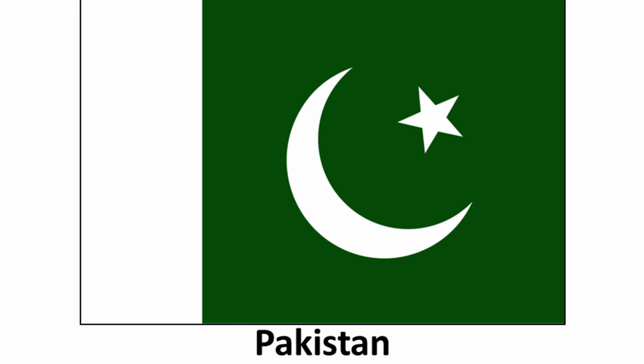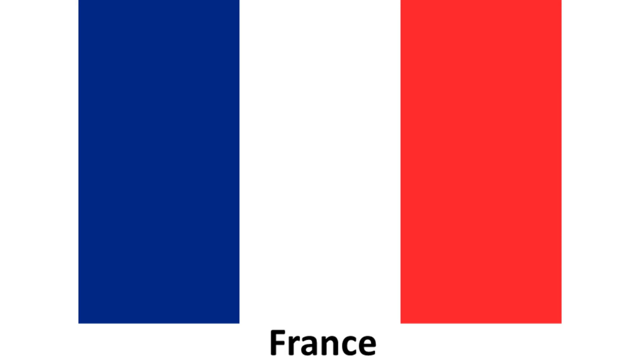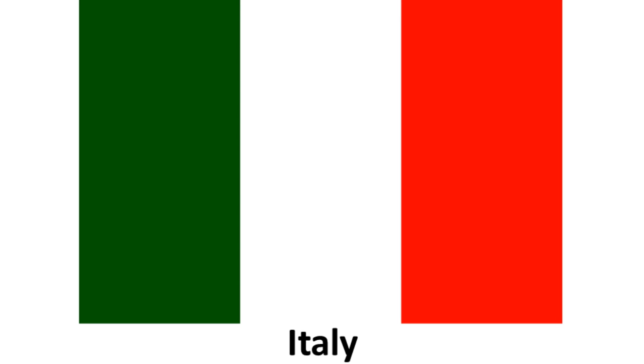A star and crescent moon are on the flag of Pakistan. A large red sun on a white background, it clearly is Japan. The flag of France is blue and red with a white stripe in between.